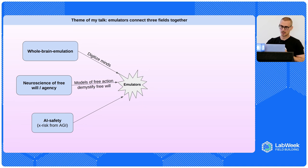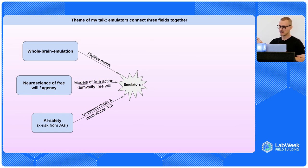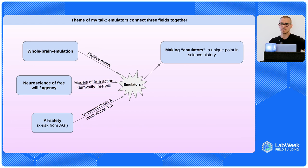If we can have these kinds of human-like emulators, then we might have another path to understandable and controllable AGI. I think making emulators is an extraordinary time in human history and in science. We're trying to do something pretty extraordinary — we're trying to make copies of whatever we are: conscious experience, etc. There's never been a time like this.